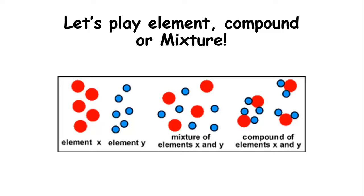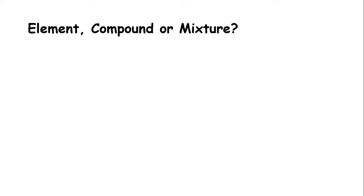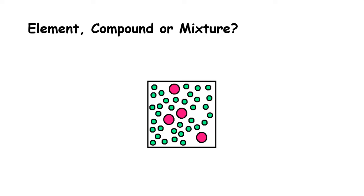Let's play element, compound, or mixture. You got element X, element Y. Here's an example of a mixture in the middle, elements X and Y. And then compound of elements X and Y. Element, compound, or mixture? If you said mixture, you got that one right.